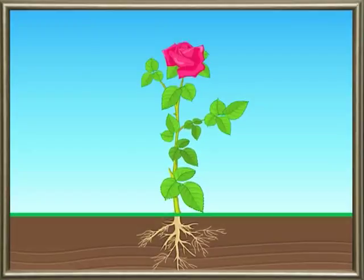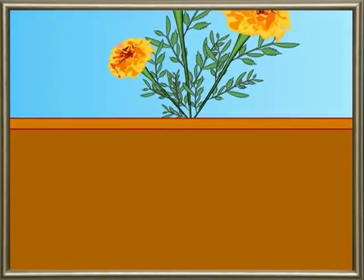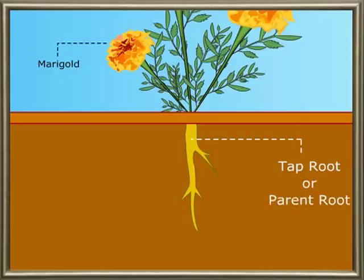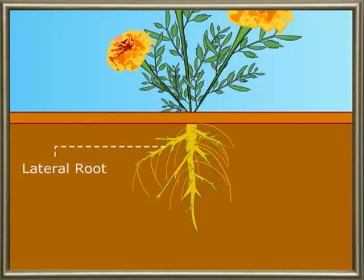The part of a plant that lies below the surface of the soil is the root. It is light in color and has many branches. In plants like marigold, the main root grows vertically downwards into the soil. This is called the tap root or parent root. From the tap root, a few roots arise and grow laterally — these are called lateral roots — and from these lateral roots, smaller rootlets arise.